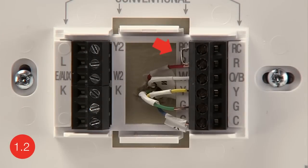You may notice a wire that looks like this, known as a jumper wire. Note if you have a jumper wire between R and RC terminals.